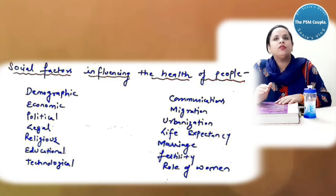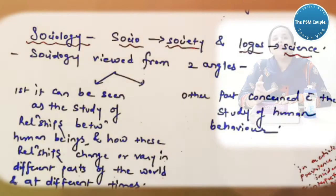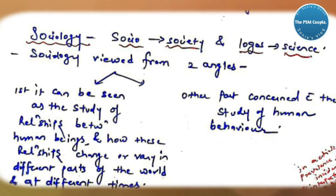There are various social factors that will influence the health of the people like demographic, economic, political, legal, religious, educational, technological, communications, migration, urbanization, life expectancy, marriage, fertility and the role of women.